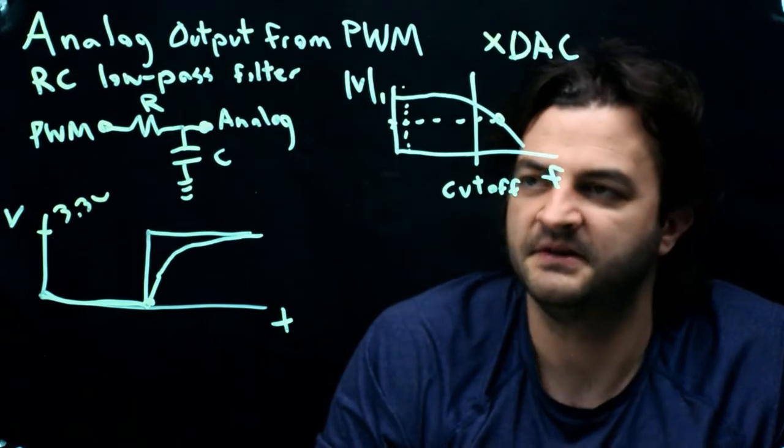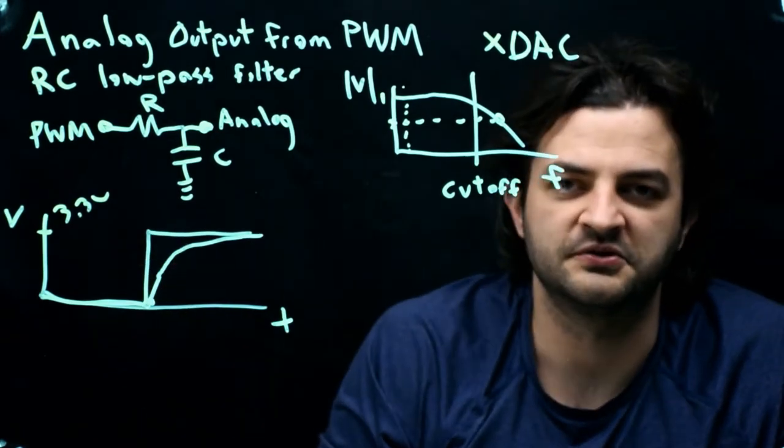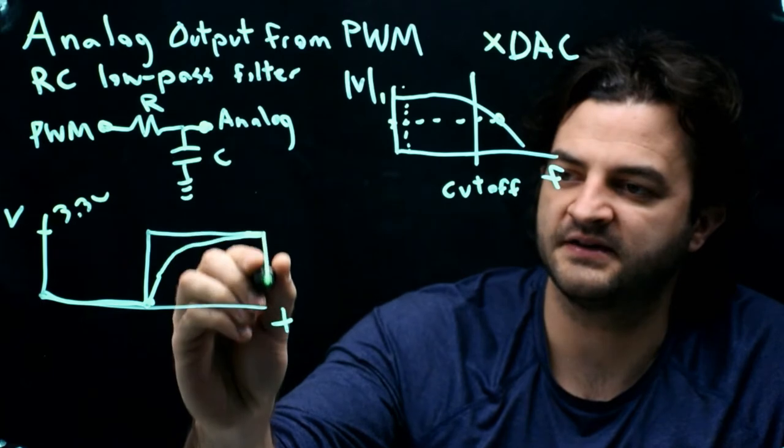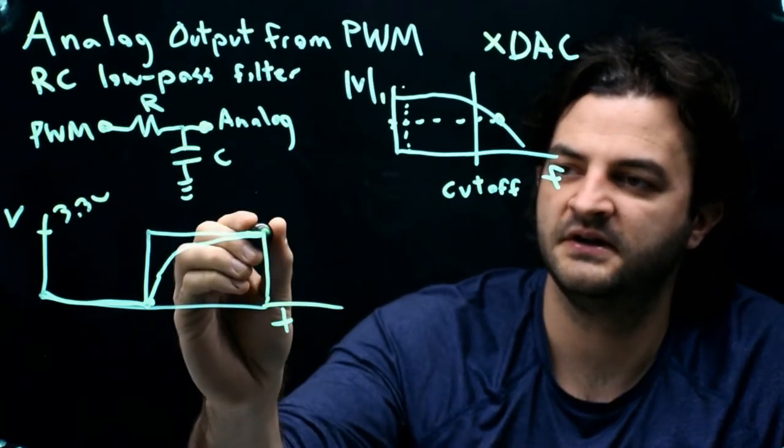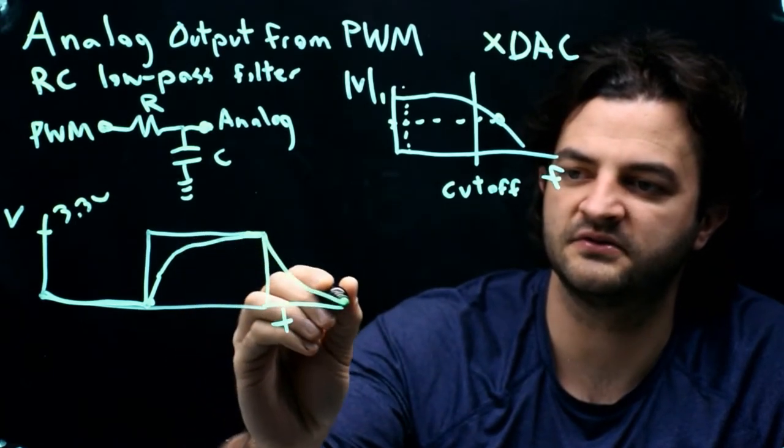Eventually, if we give it enough time, the voltage across the capacitor will approach 3.3. And then when the voltage goes back down again, when the pin goes low, we would get a downwards curve back towards zero.